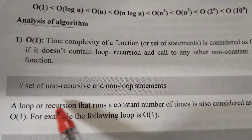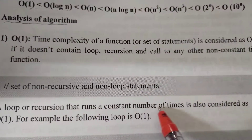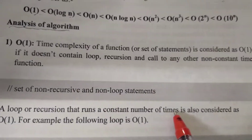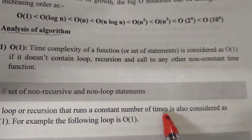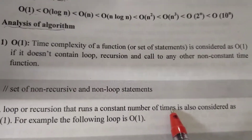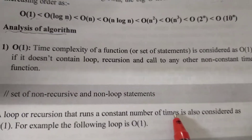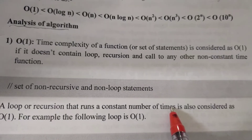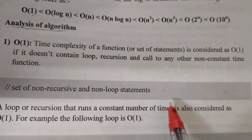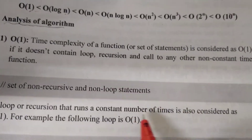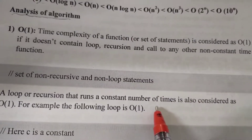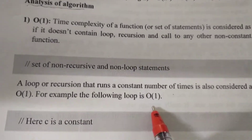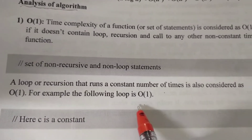If the loop or recursion runs a constant number of times — for example, i less than or equal to 10, or i less than or equal to some constant like n equals 3 — in this case, we will see order of 1.